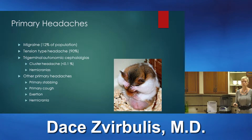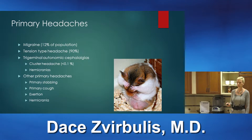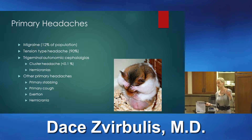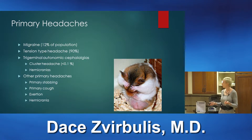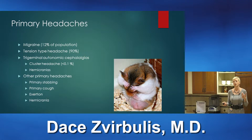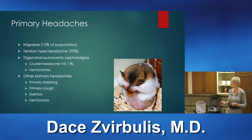With primary headaches, the most common is tension-type headache — up to 90% of the population. Most people in this room have had a tension-type headache at some point. The most common headache seen in any doctor's office, both primary care and neurology, is migraine headaches, affecting about 12% of the population. These are more severe, more disabling, and patients tend to seek more help for them.